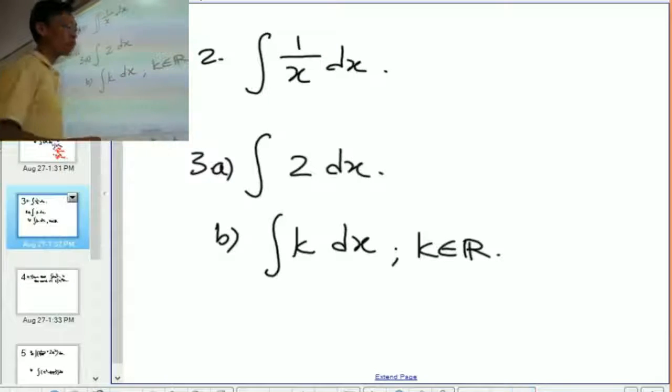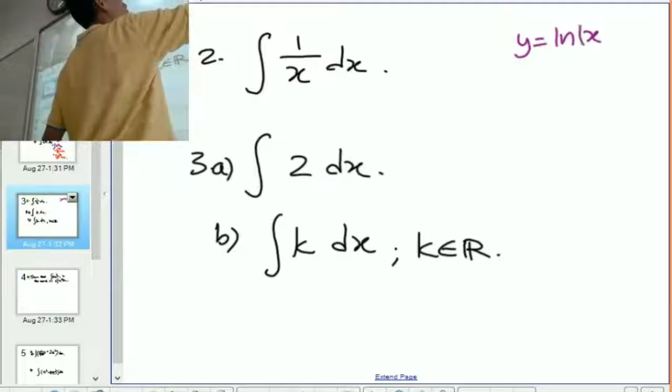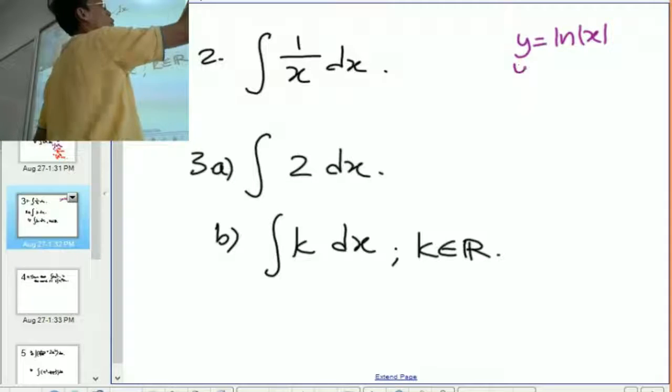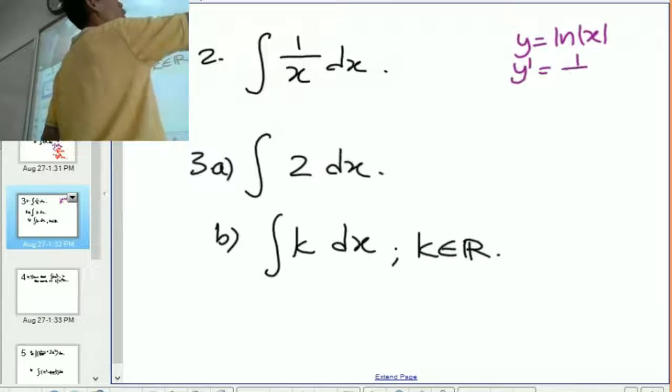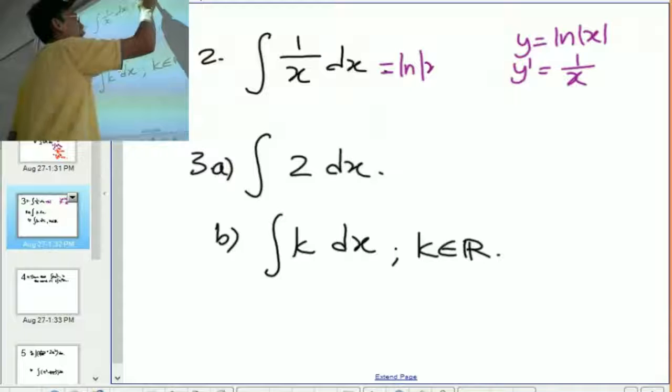So basically here we need to ask the question, what do I need to differentiate in order to get 1 over x? Very good, we differentiate natural log of x for example. When we differentiate natural log of x, then the answer to this is 1 over x. So here, what I need to put is natural log of x plus c.